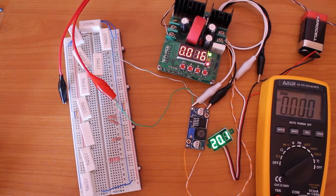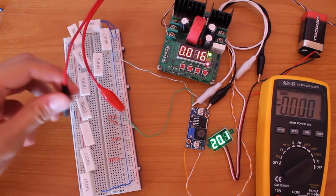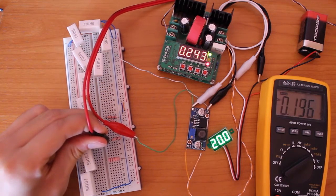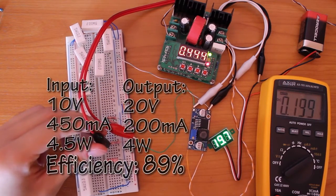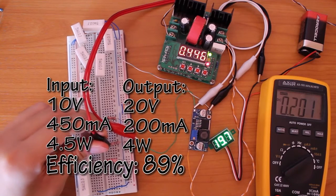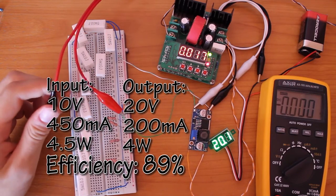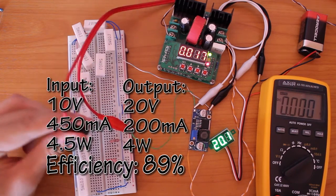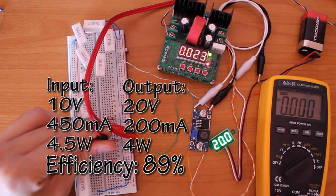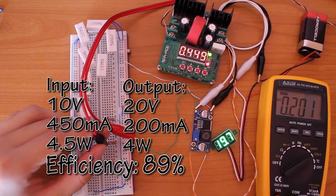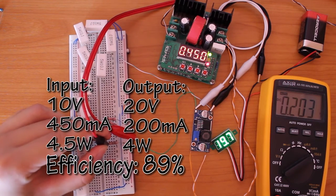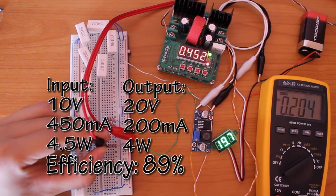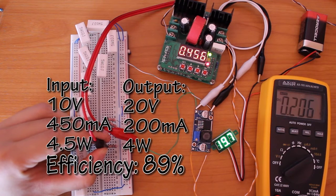But if we connect a 100 ohm load, we have 10 volts on the input with 450 milliamps, which is 4.5 watts of power. On the output we have 20 volts with 200 milliamps, which is 4 watts of power, giving us a conversion efficiency of around 89%.